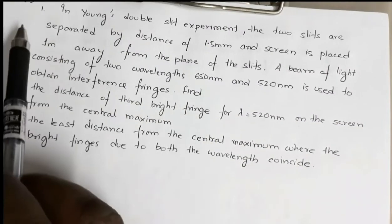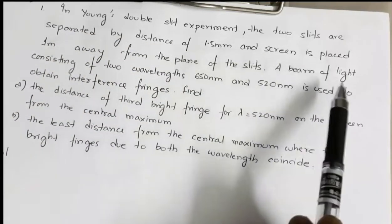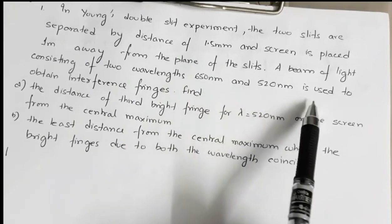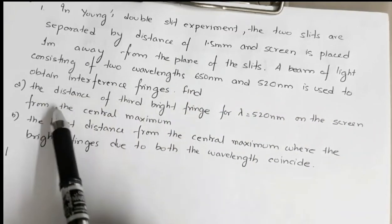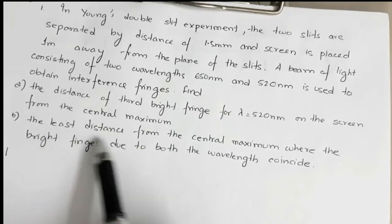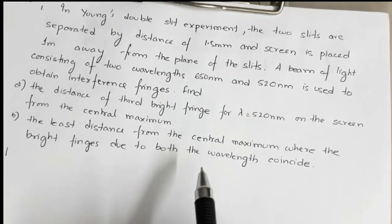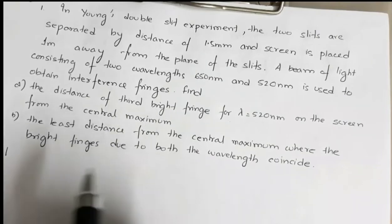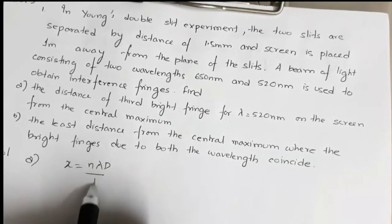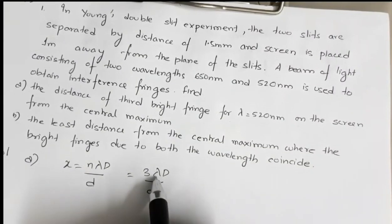So the 4th fringe corresponding to λ1 = 650 nm coincides with the 5th fringe of λ2 = 520 nm. Substituting n = 4, λ = 650 nm into x = nλD/d with the given values of D and d gives the distance from the central maximum. This question is from 2014: the ratio of intensities at minima to maxima in Young's double slit experiment is 9:25. Find the ratio of width of the two slits.